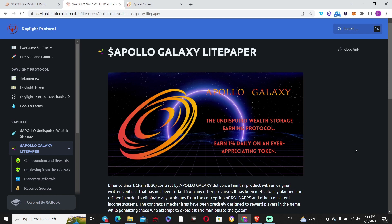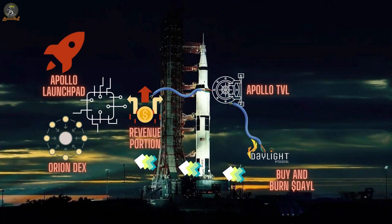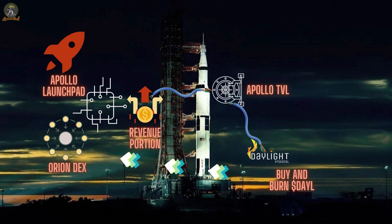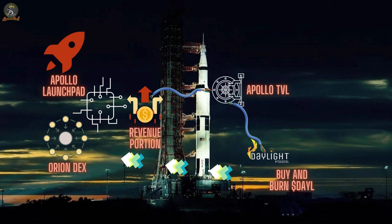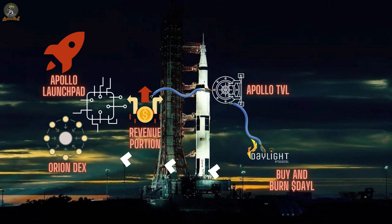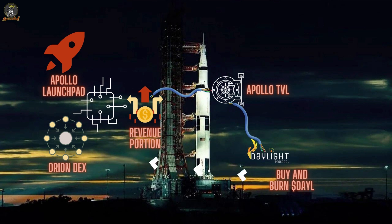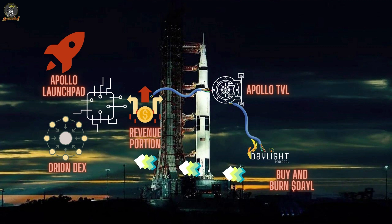Now, what differentiates Apollo Galaxy from everything else on the market? In regards to external revenue sources — a buzzword that attracts investors — most projects are just one-offs where some revenue goes toward buybacks. That's not the case here. There are actually two sources currently generating revenue: the Orion DEX, which generates revenue through trading fees when people trade on it, and the Apollo Launchpad, which has fees associated with it. A portion of all of this is put back into the TVL.